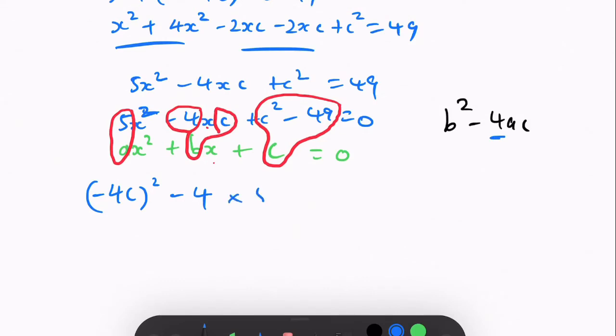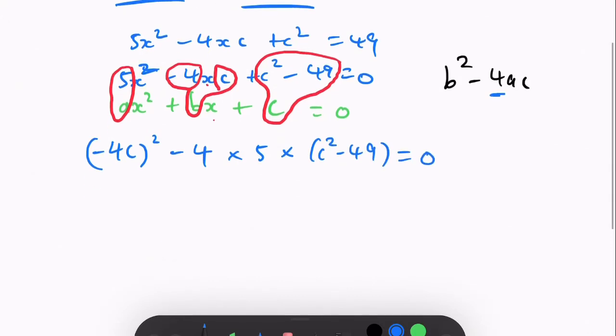times 5, because that's the a value, and then times c squared minus 49 equals 0.